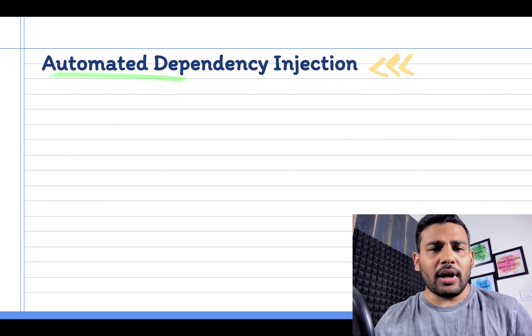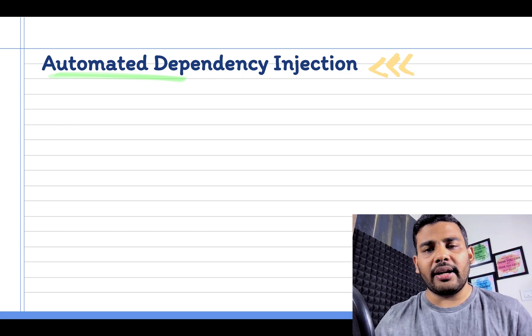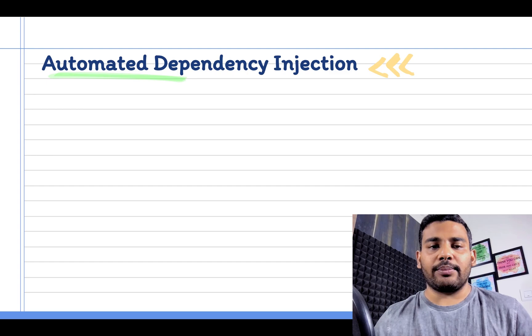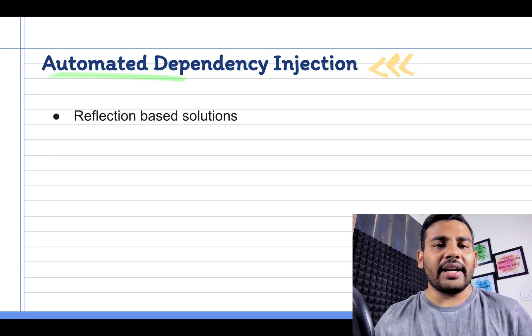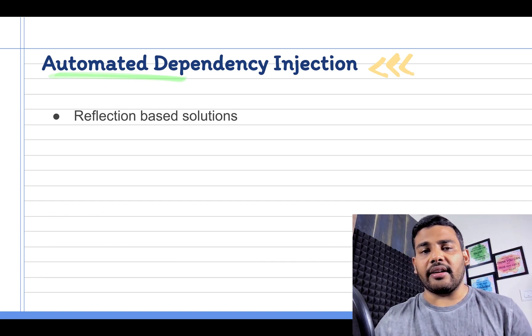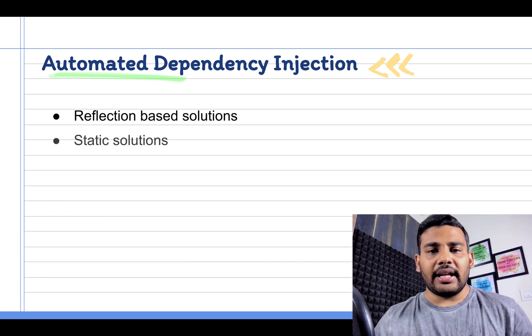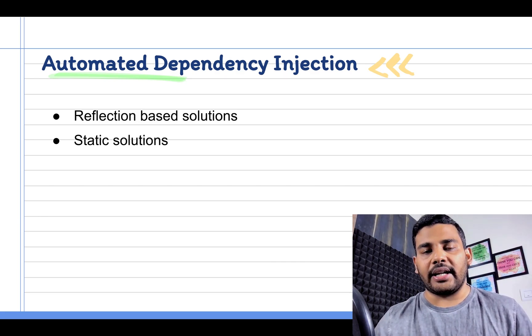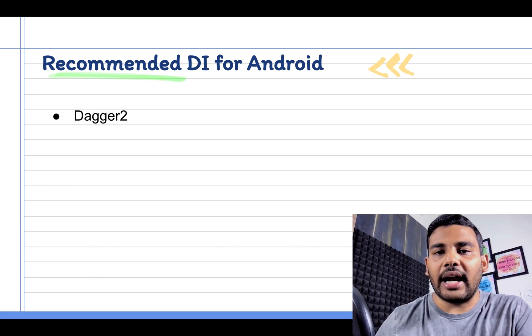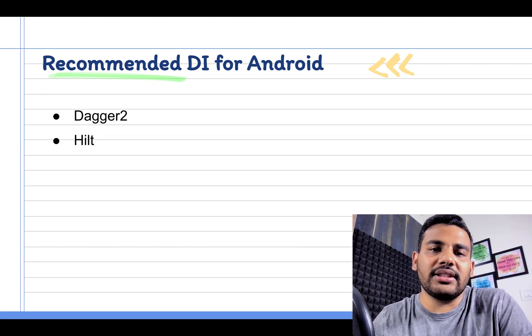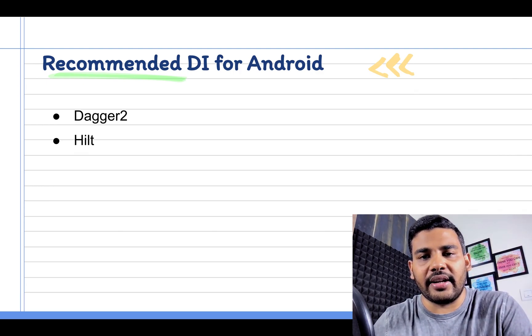To tackle these problems we have automated dependency injection solutions that can be categorized in two types. The first one is reflection-based solution that generates the dependency in runtime, and static solution that generates the code to provide dependency in compile time. In this course we will learn about Dagger and Hilt. Both are static solutions of dependency injection, as both libraries generate dependency injection code at compile time.